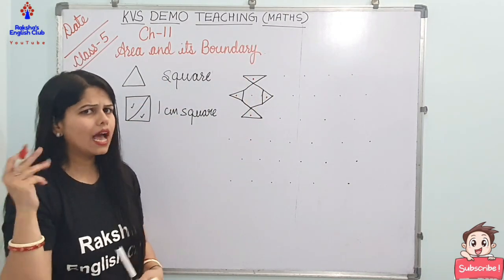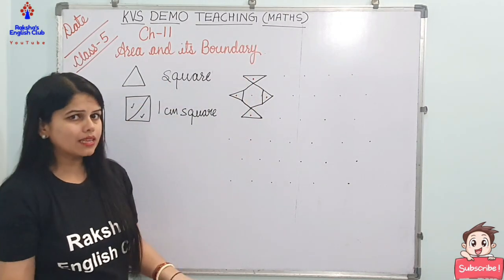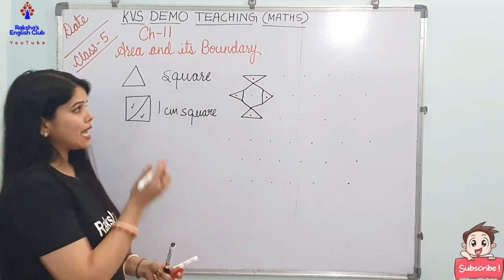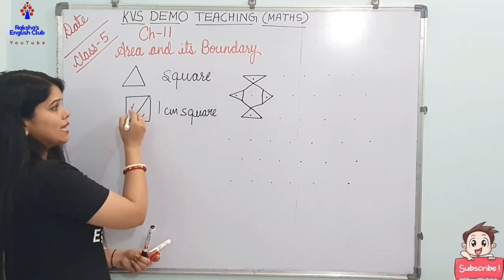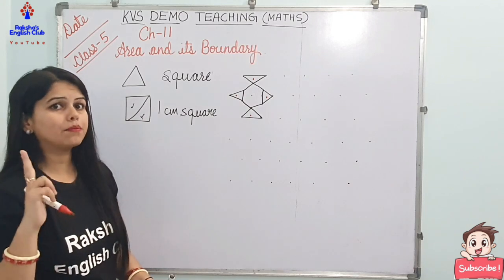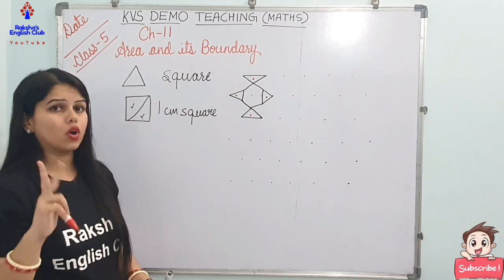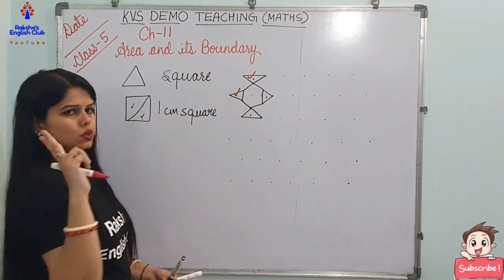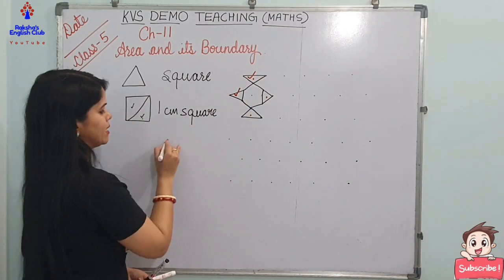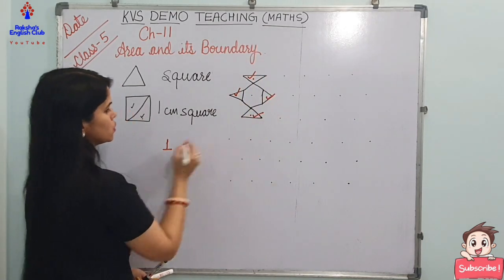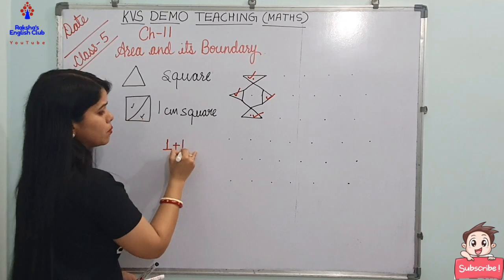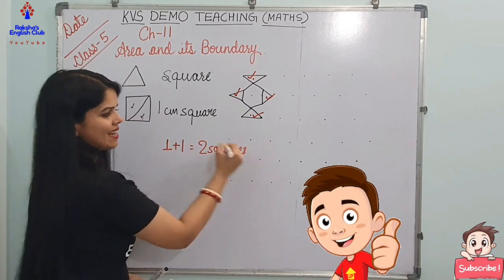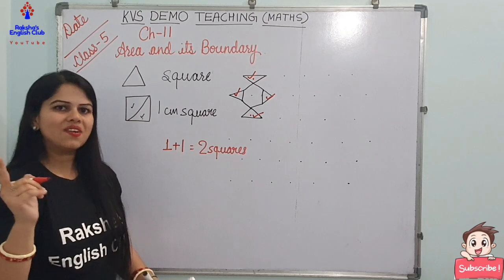If I am counting two triangles, they together become one centimeter square. Can you tell me how many triangles are here in this picture? Let's count — one, two, three and four. Very nice. But how many squares are in this picture? Two triangles together make one centimeter square, so one, two make one; then one, two again — that makes two squares.